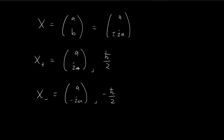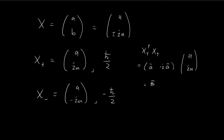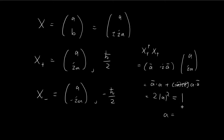To find A, we use normalization. Taking the Hermitian conjugate of the column matrix (A, iA) and multiplying by itself, we get A* times A plus (−i)(i) times A times A*, which is A* times A plus 1 times A times A*. That gives 2|A|². For the eigenvector to be normalized, this product must equal 1, so |A|² = 1/2, meaning A = 1/√2.